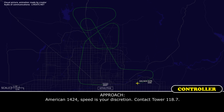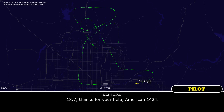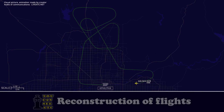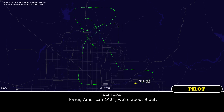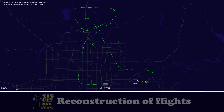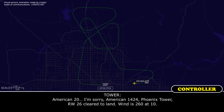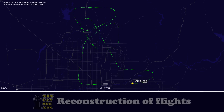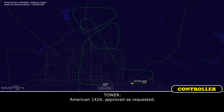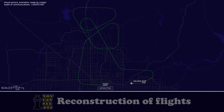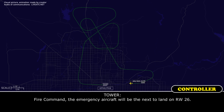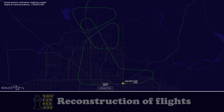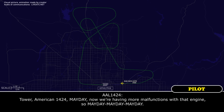American 1424, speed at your discretion, contact tower 118.7. 118.7, thanks for your help, American 1424. We're about 9 out. American 1424, Phoenix Tower, runway 26, cleared to land, 1260.1. Roger that — we're a little fast, we need some turns to the right. American 1424, approved as requested. Fire command, the emergency aircraft will be the next to land on runway 26. Tower, American 1424 — Mayday, mayday, mayday. We're having more malfunctions with that engine.